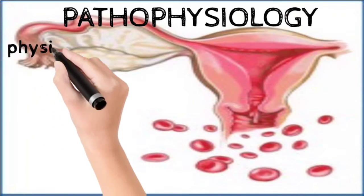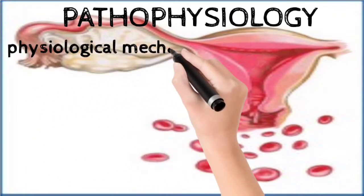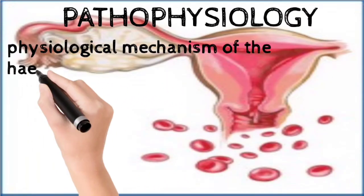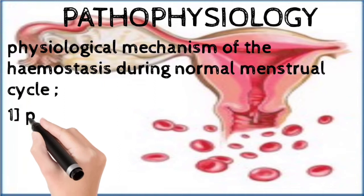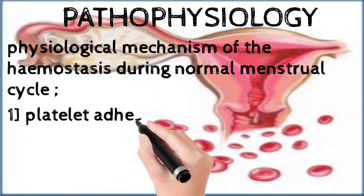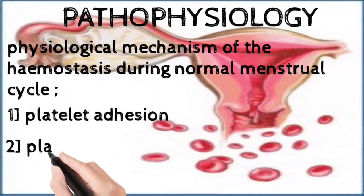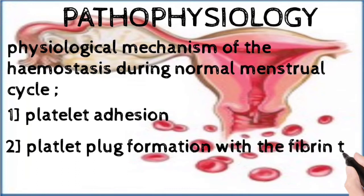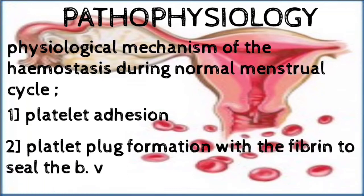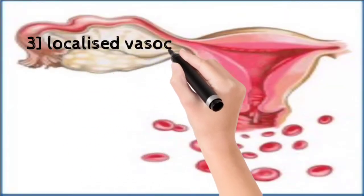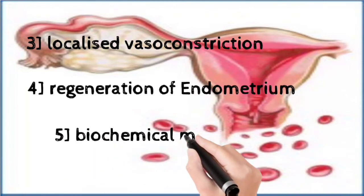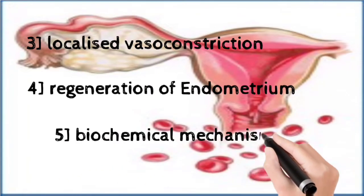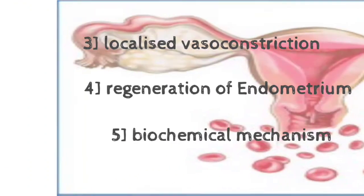Now we see the pathophysiology. The physiological mechanism of hemostasis during the normal menstrual cycle involves: first, platelet adhesion; second, platelet plug formation with fibrin to seal the blood vessels; third, localized vasoconstriction; regeneration of the endometrium; and biochemical mechanisms.